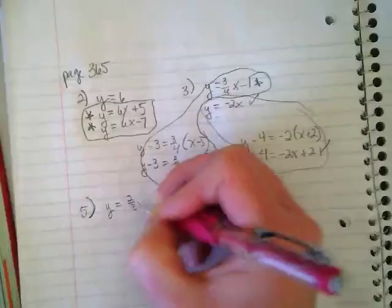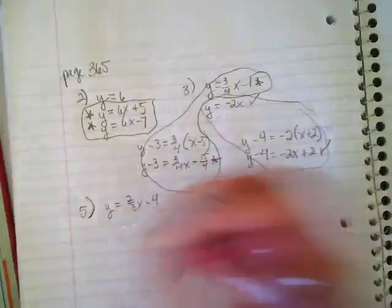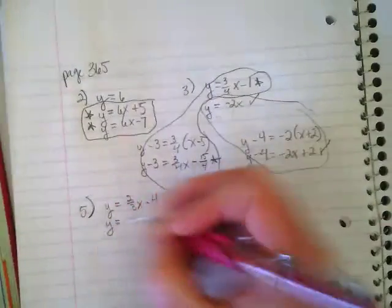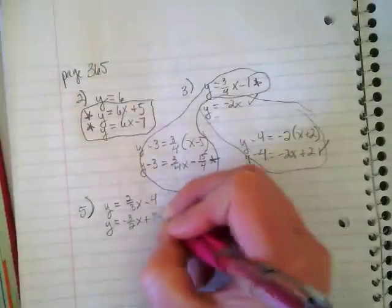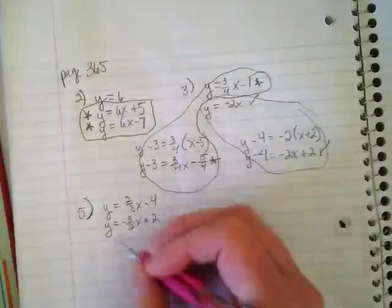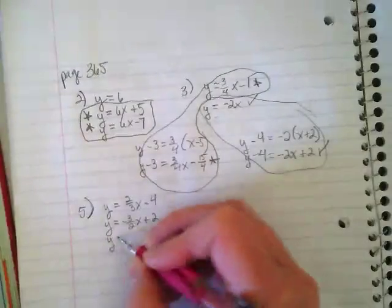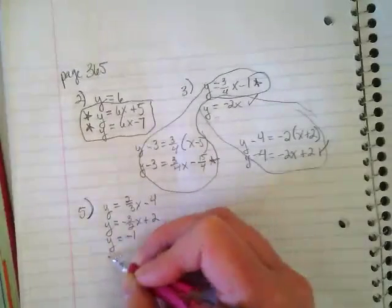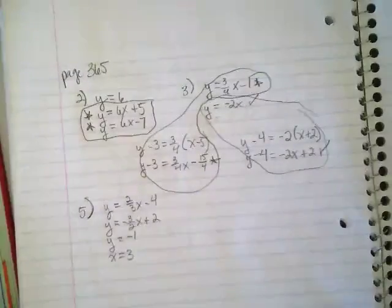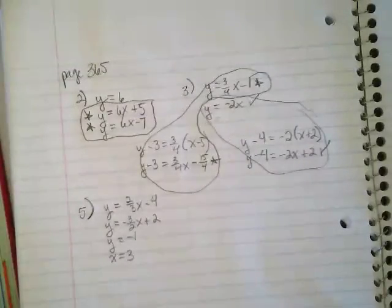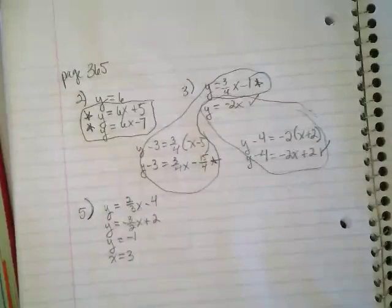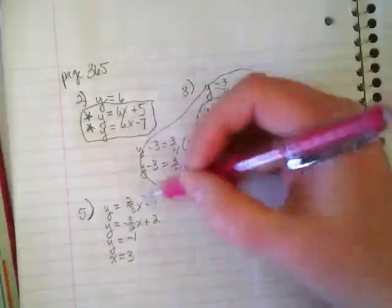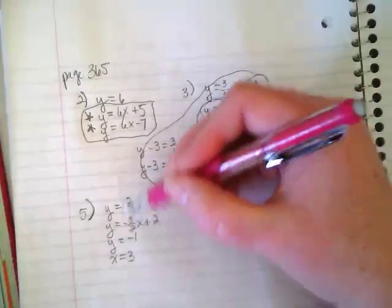We're going to skip down to five and identify which lines are perpendicular. Y equals two-thirds X minus four. Y equals negative three-halves X plus two. Y equals negative one. And X equals three.